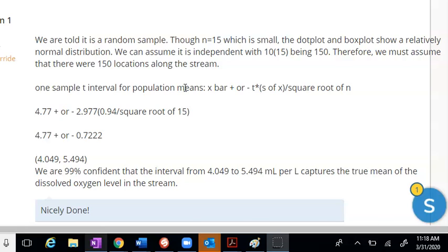The third thing is showing your work. And this is a nice job showing the work and having the correct interval. And the fourth point is obtained by the correct interpretation. So in this last sentence, she says we are 99% confident that the interval from 4.49 to 5.594 captures the true mean of the dissolved oxygen level in the stream. This is a really good solution.